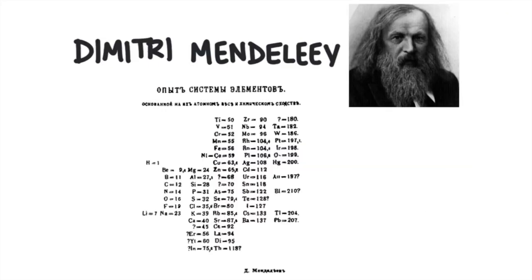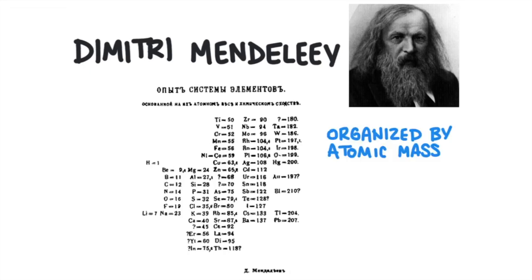The first widely accepted periodic table was designed by a Russian scientist named Dmitry Mendeleev. He organized the elements by increasing atomic mass. His periodic table was useful because it organized elements in such a way that he could predict the properties of other elements and even predict the existence of undiscovered elements. You can notice the blanks and question marks in his periodic table.